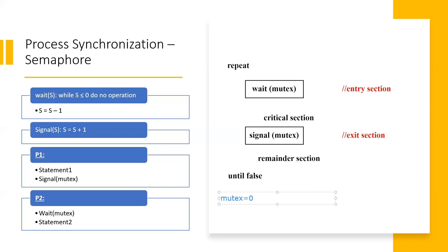The semaphore variable's value is less than or equal to zero — zero is less than negative, right? And equal to zero is also zero. So what does it mean? If it is zero, it means there is some more consumption. If it comes into the critical section and it is occupied, the value is less than one.